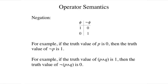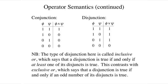For example, if the truth value of a conjunction is one, then the truth value of the negation of that conjunction must be zero. The truth value of a conjunction is true, under a truth assignment, if and only if the truth values of its conjuncts are both true. Otherwise, the truth value is false. The truth value of a disjunction is true if and only if the truth value of at least one of its disjuncts is true. Otherwise, the truth value is false.